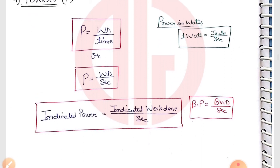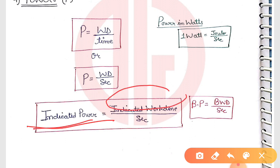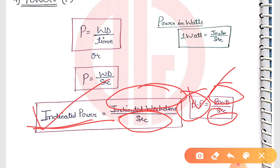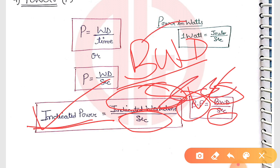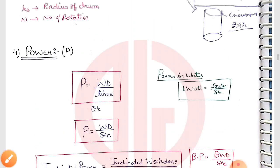Now for different types of power: if we talk about indicated power, it's indicated work done per second. If we talk about brake power, it's brake work done per second. This is indicated power or brake power per second.